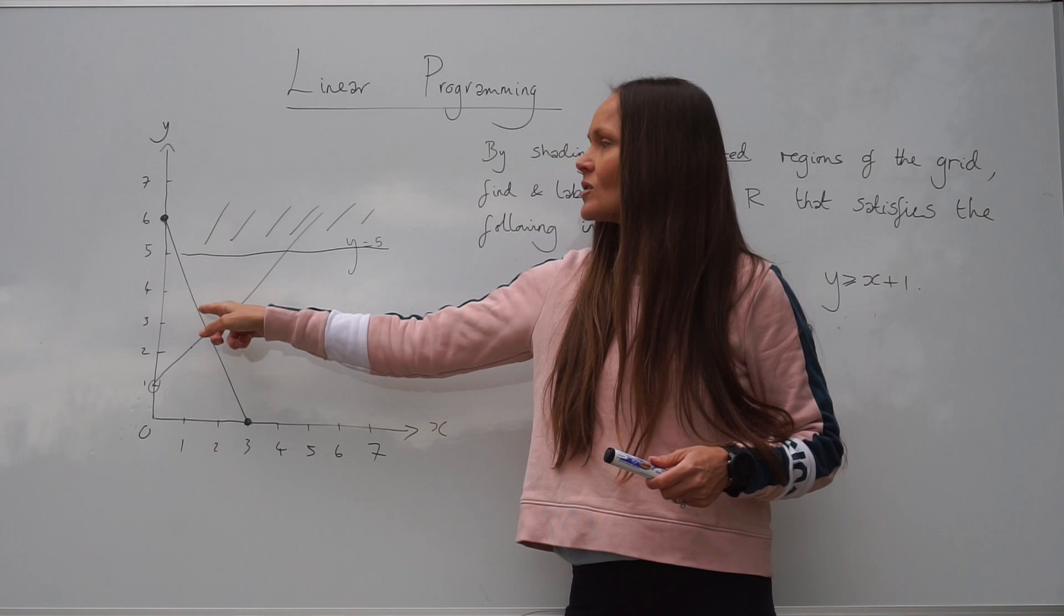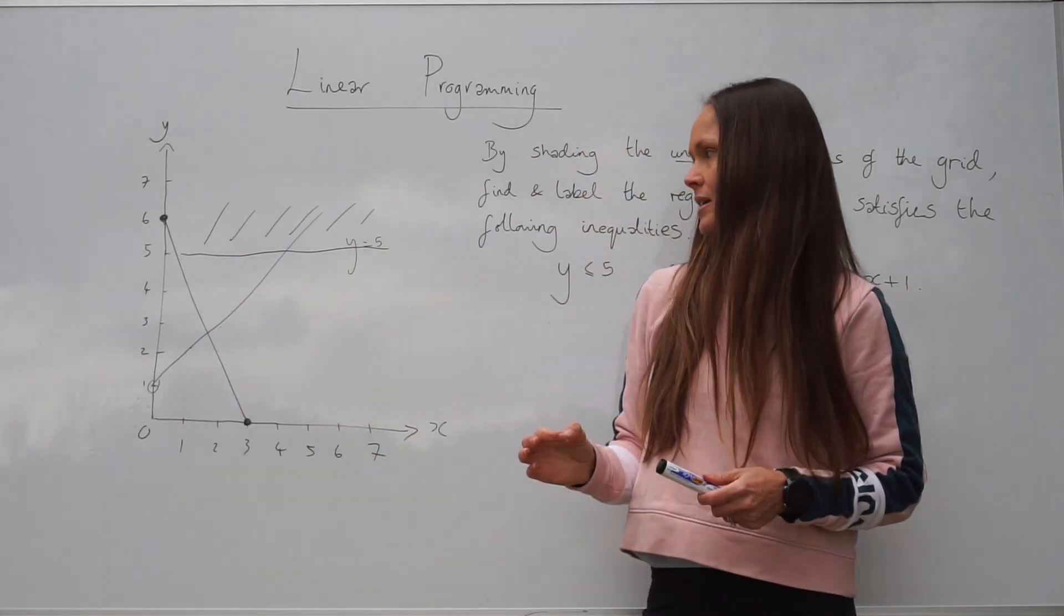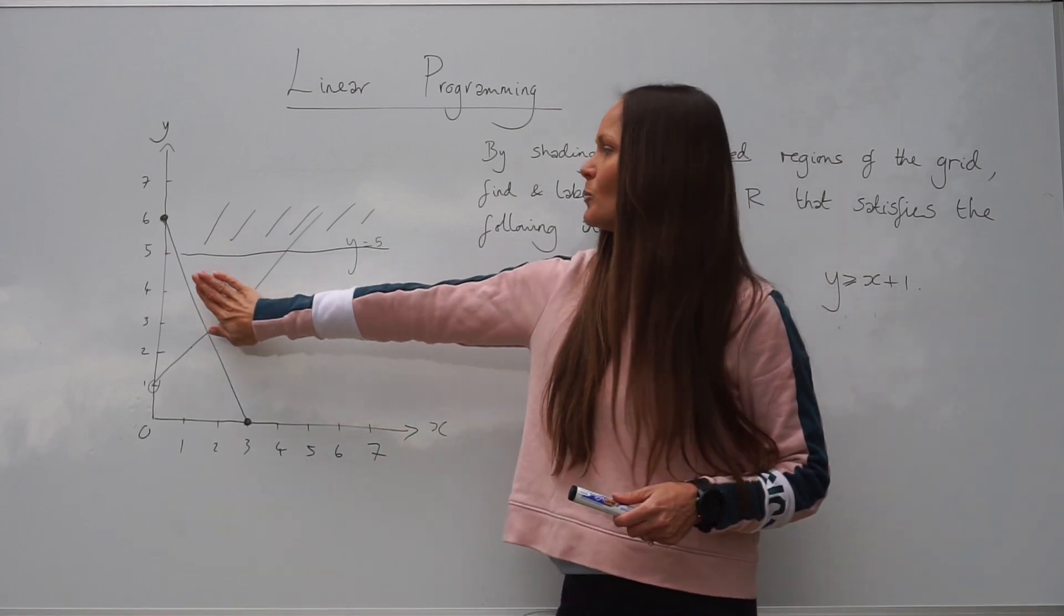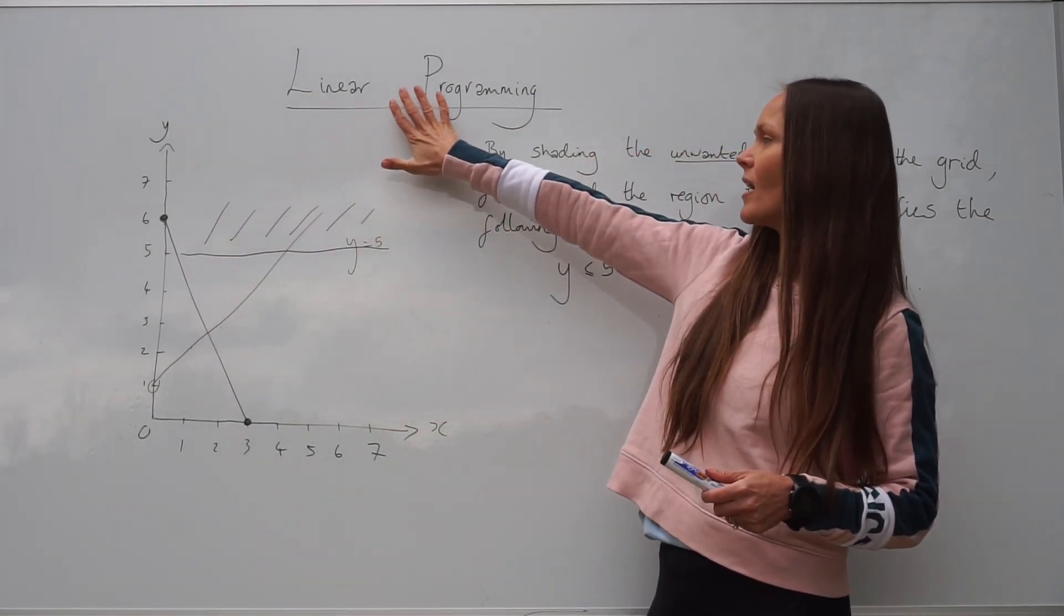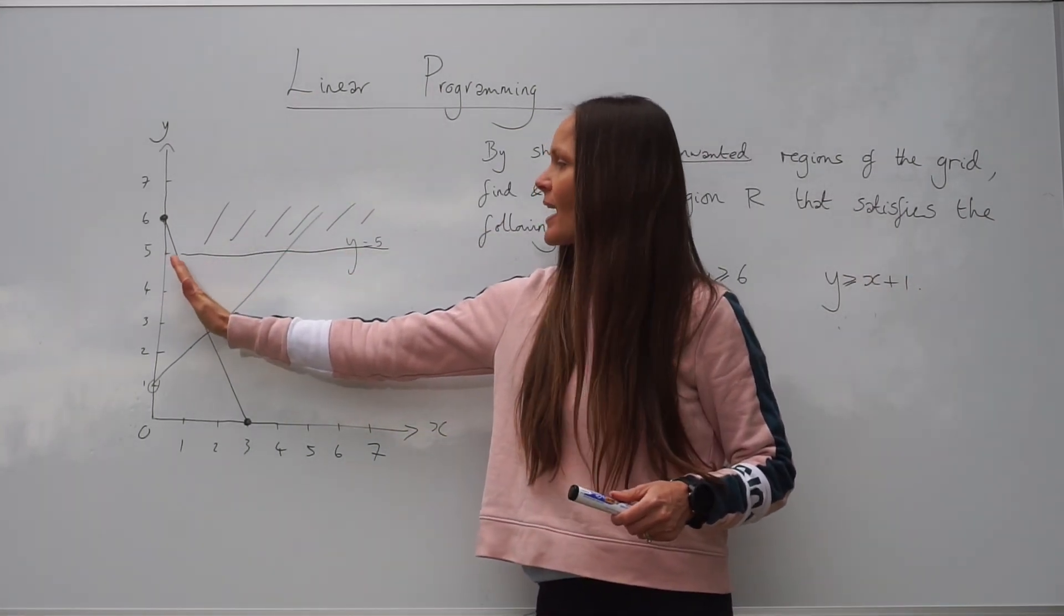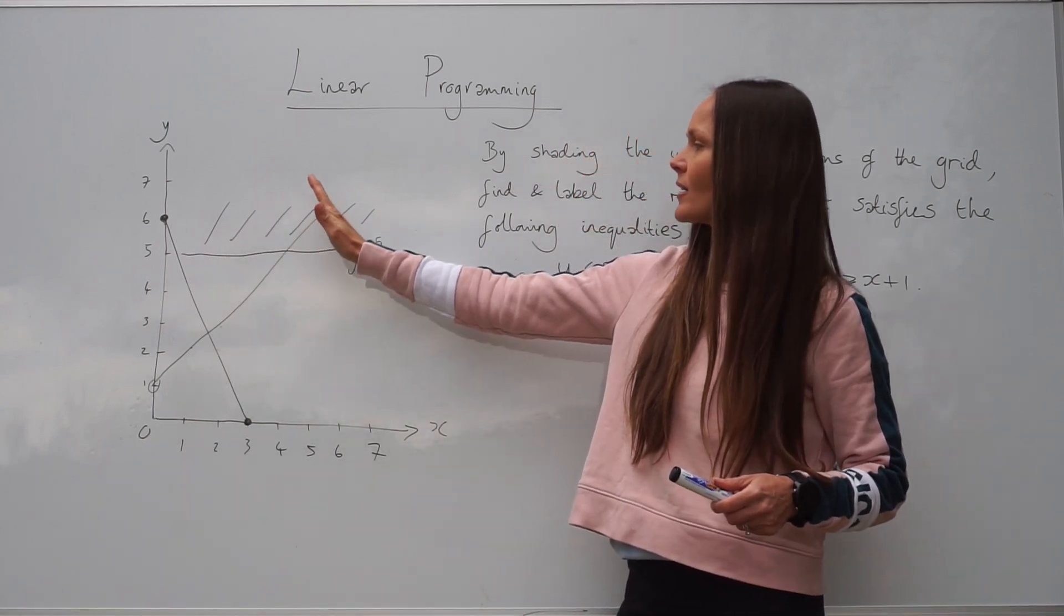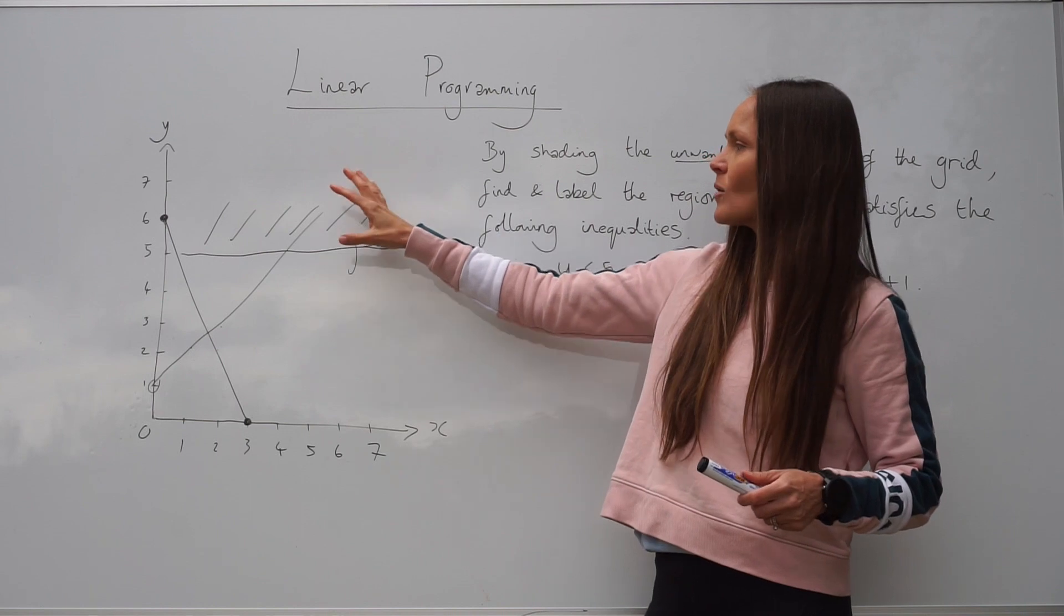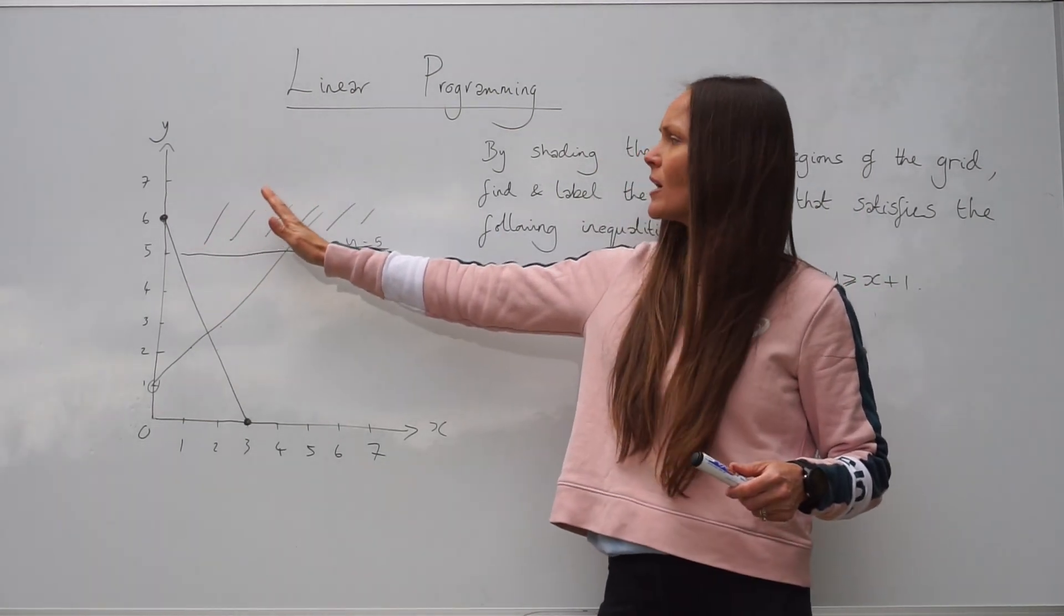On the line, it's 2x plus y equals 6. So if you want greater than, it would be everything above the line. Because if you look at the way my hand's moving above this line, parallel to this line, all of the x and y values are getting bigger and bigger and bigger.